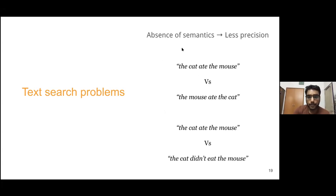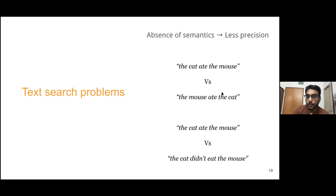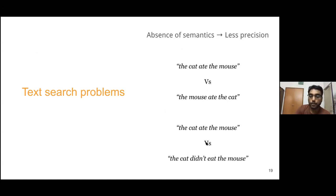There is also the absence of semantics. 'The cat ate the mouse' is not equal to 'mouse ate the cat' but the words completely overlap, so at the unigram level it will show up as a match. Similarly, 'the cat ate the mouse' and 'cat did not eat the mouse' have a lot of matching words and will also show up in results - leading to incorrect results.